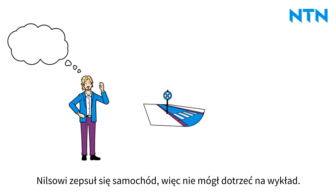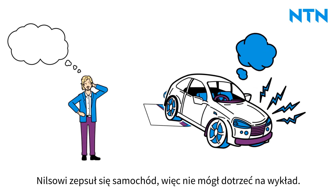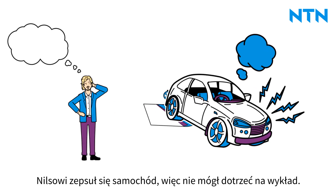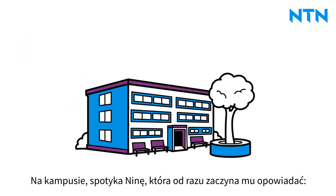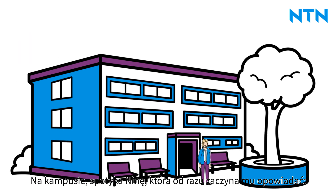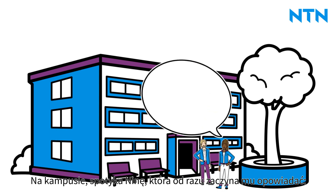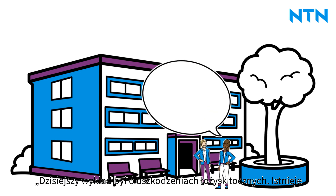Niels has a problem. Because his car broke down, he couldn't make it to the lecture. Later on campus, Niels meets Nina. She tells him that today's lecture was about rolling bearing damage.